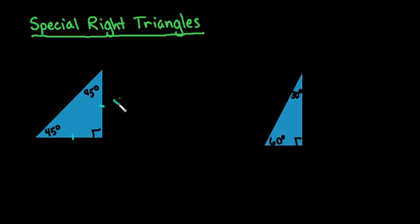So if this side is x and this side is x, if I use the Pythagorean theorem, x squared plus x squared equals this side squared. What ends up happening every single time in a special right triangle is this becomes x√2.